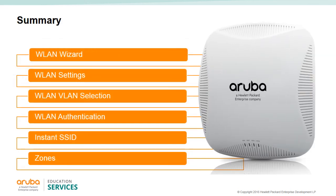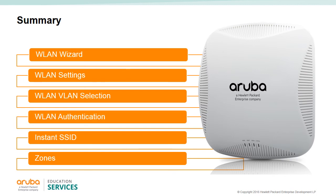In this module we saw the wireless LAN wizard, the wireless LAN settings, the wireless LAN VLAN selections such as virtual controller assigned, the wireless LAN authentication including guest and 802.1x, what happens to the instant SSID once a wireless LAN is created, and how zones can be created where IAPs placed in zones will only advertise the SSIDs that are in the same zone.